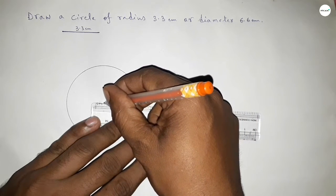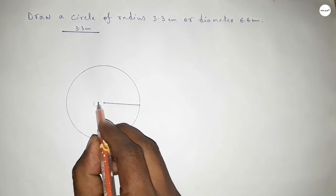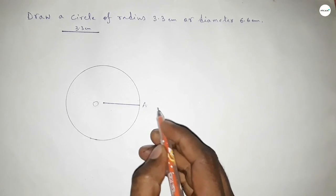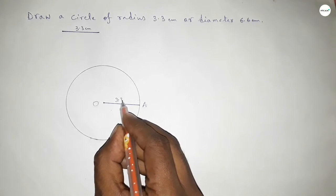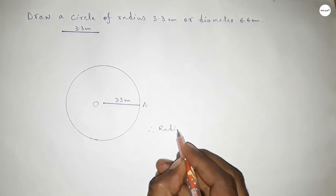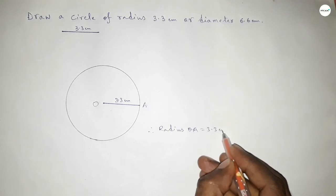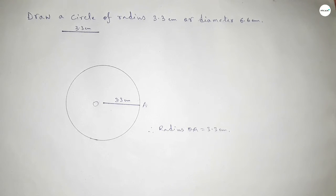Taking here the center O and here a point, so OA equal to 3.3 centimeter. Therefore radius OA equal to 3.3 centimeter. That's all, thanks for watching.